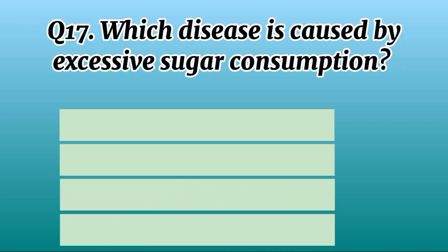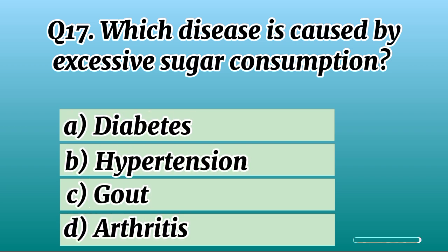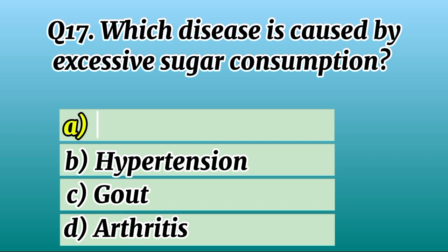Question 17. Which disease is caused by excessive sugar consumption? Correct option A: Diabetes.